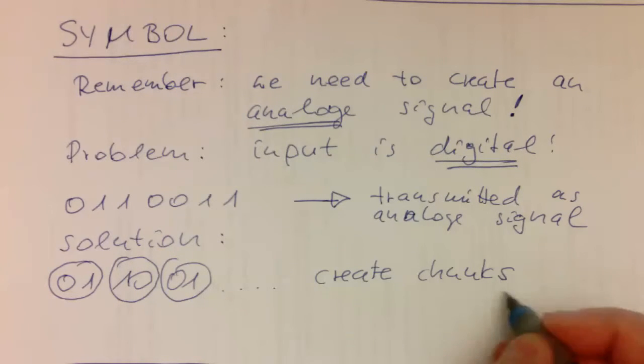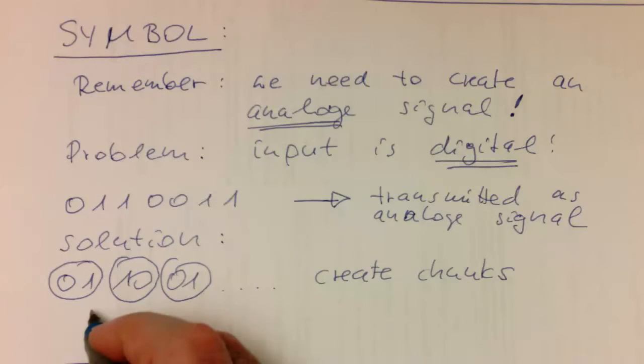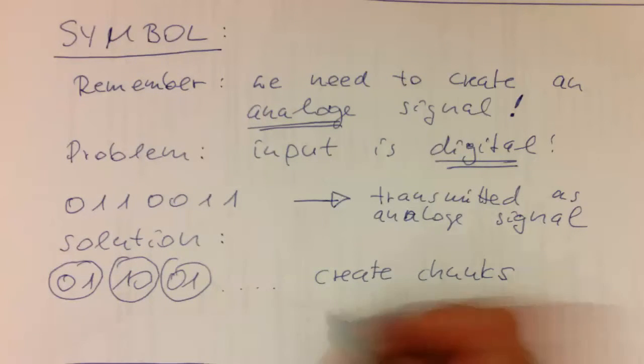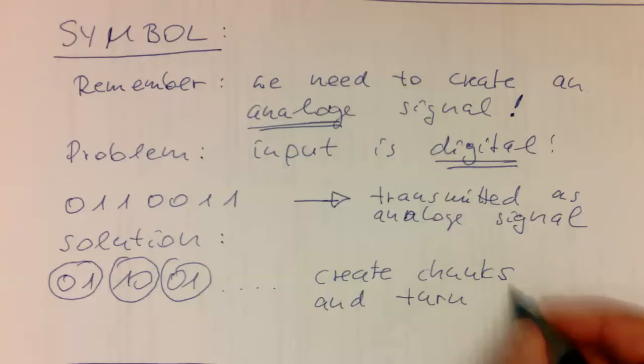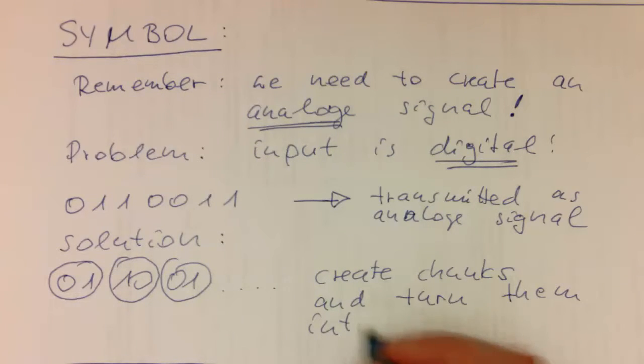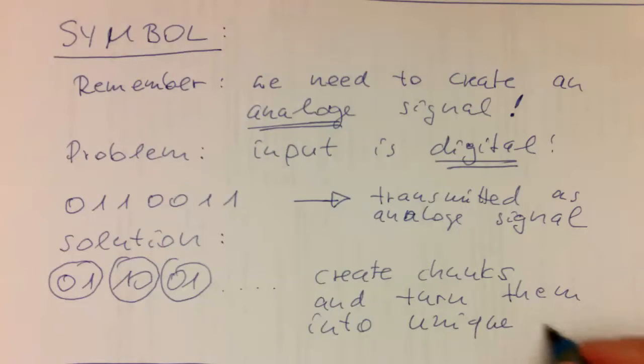Create chunks and transmit them as unique waveforms. For every combination here, create a unique waveform. Create chunks and turn them into unique waveforms.